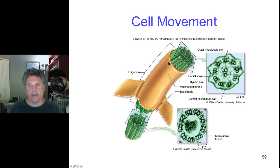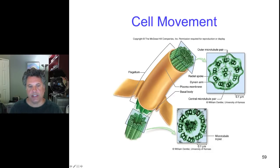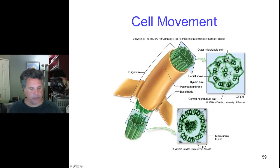This flagellum structure could, for example, exist in a sperm tail — this would be a classic picture of a sperm tail. There are some variations whereby there are actually microtubule triplets without a central pair in some flagella, but this is the classic 9+2 arrangement of microtubules in a flagellum or cilium.